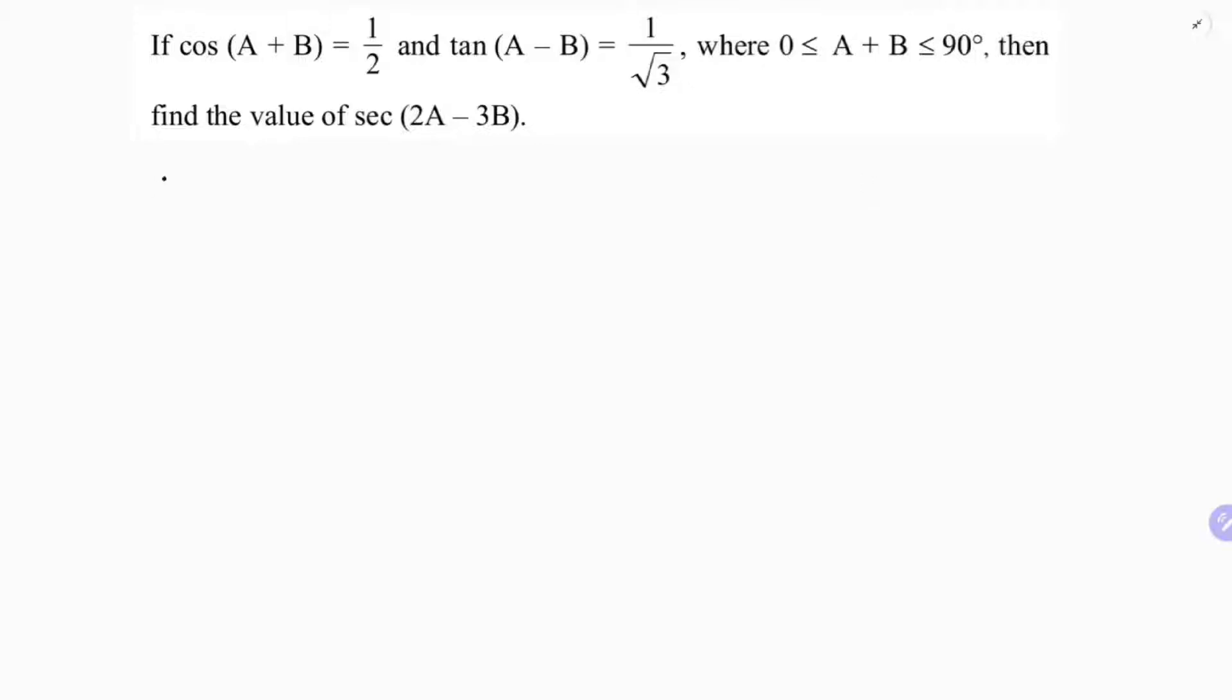So we need to find this value, sec(2A - 3B). Before that, see they gave cos(A + B) equals 1 by 2. Whenever they will give A plus B or A minus B, the value next to it will be definitely a standard value. In cos, 1 by 2 you will get for 60 degrees.